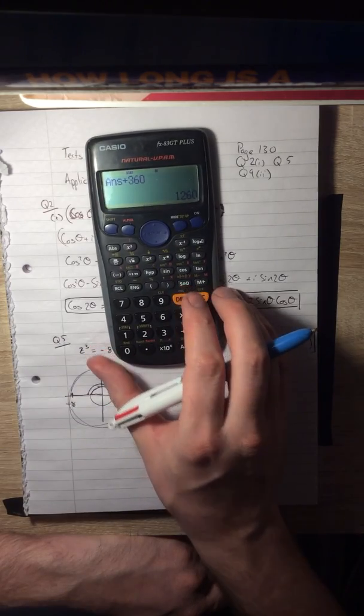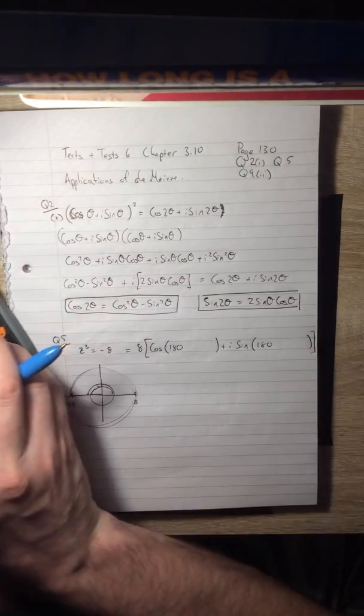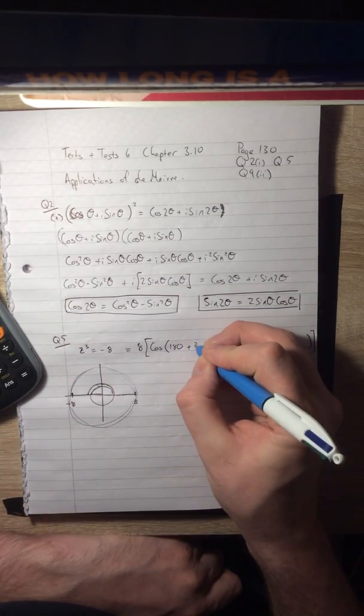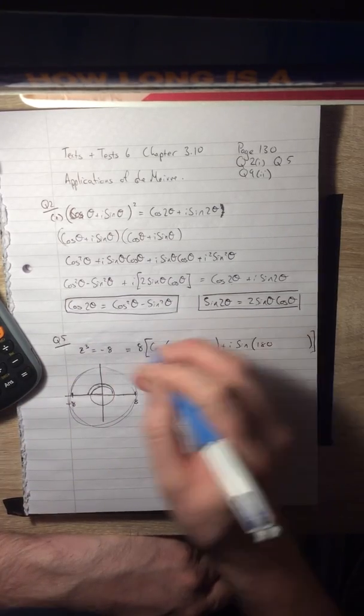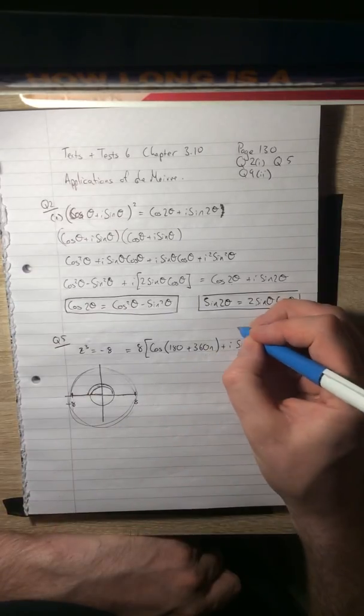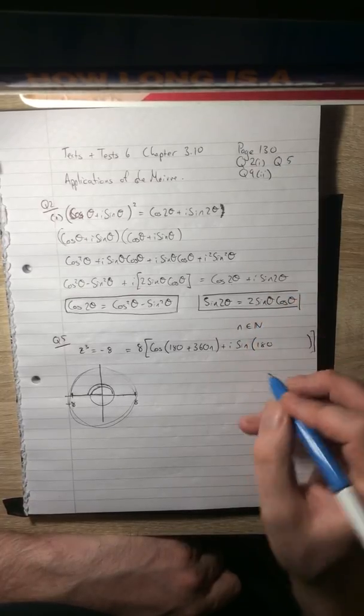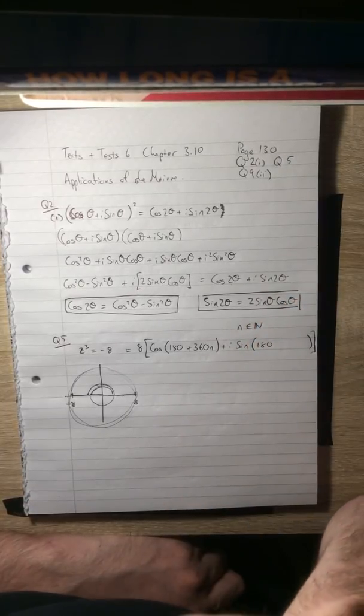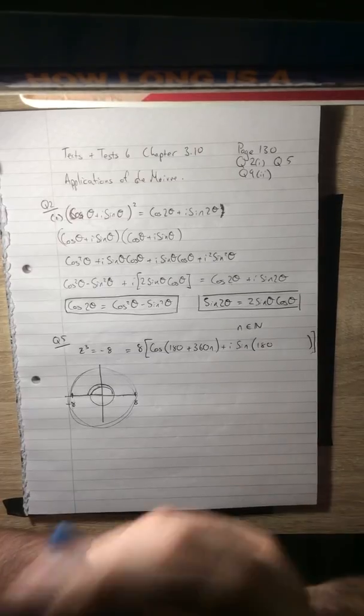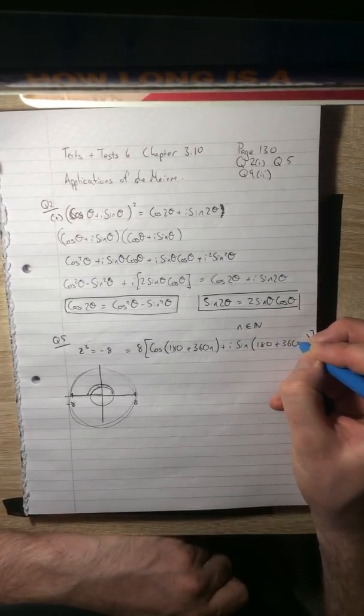Or it could be 1260, that means one more rotation. In fact, it could be any multiple of 360 could be the argument, as long as you add 180 onto it. So that's what we say, it's 360n where n is one of the natural numbers: n is 1, 2, 3, 4, 5.